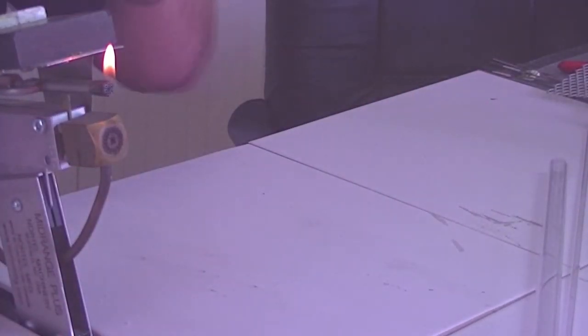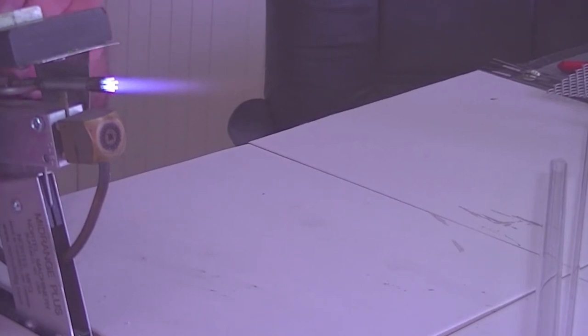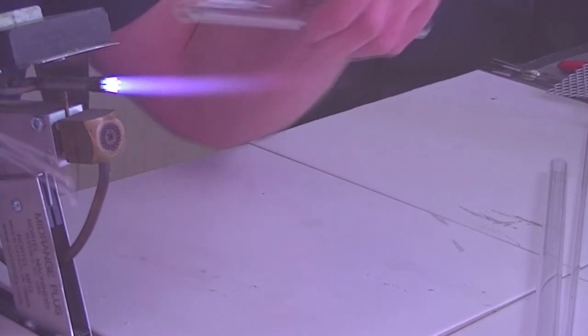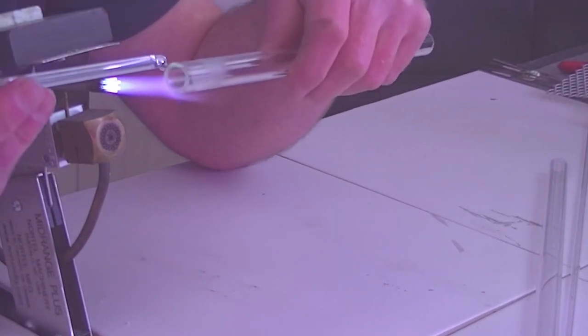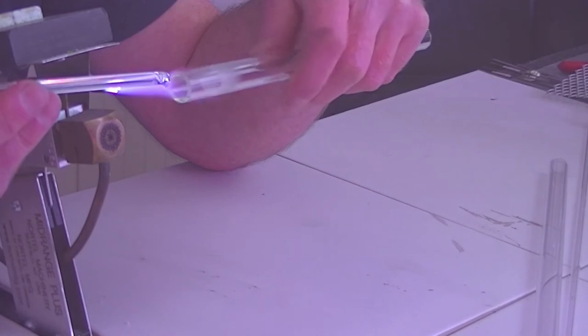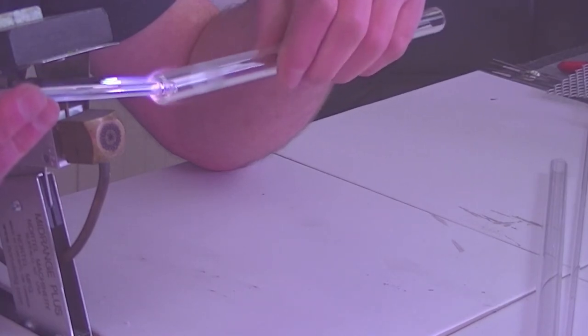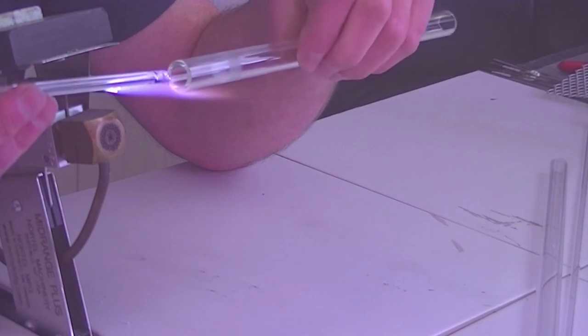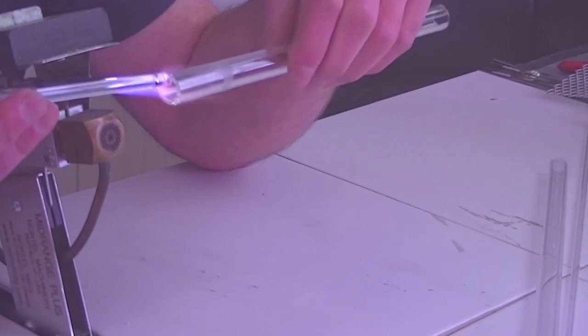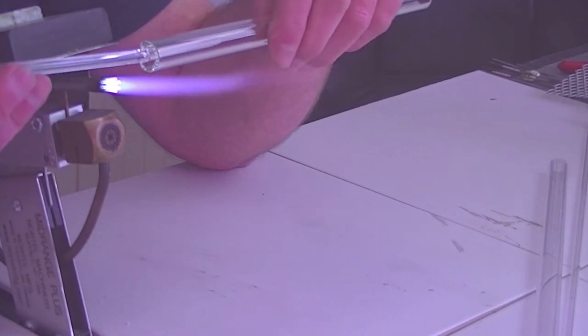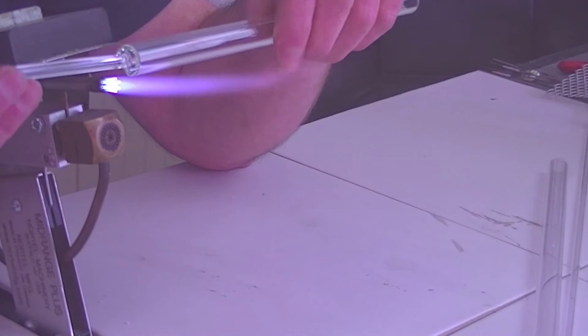And then we're going to light the torch, and this is a miner burner that's working on one Oxycon, so you need a reasonably tight flame. Take a piece of rod and we're just going to heat the end of the tube and the rod and just do a very crude simple cold seal, because it will be broken off shortly after.